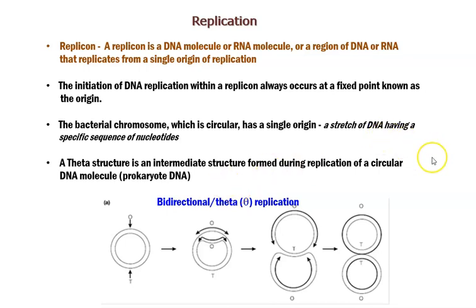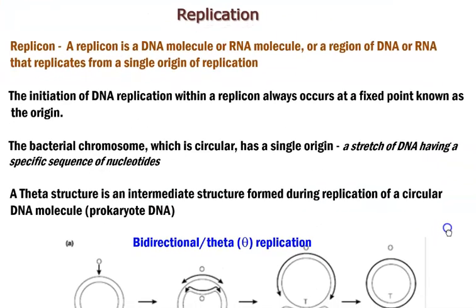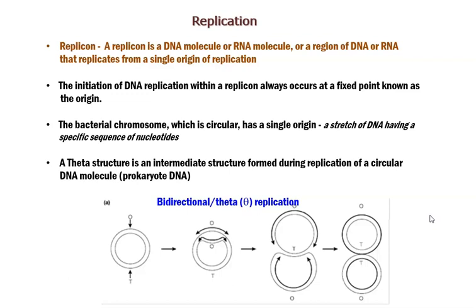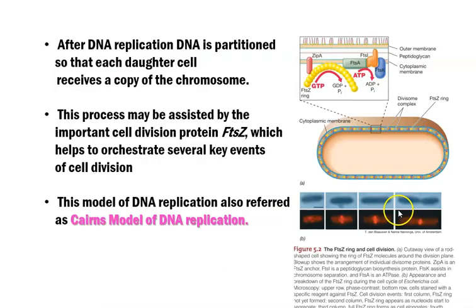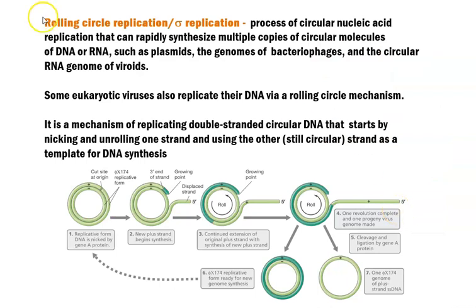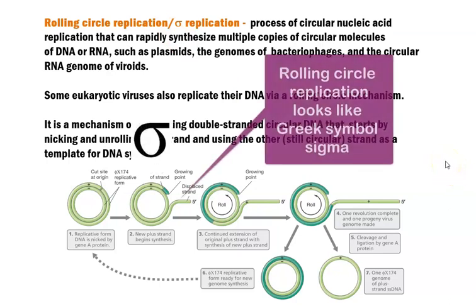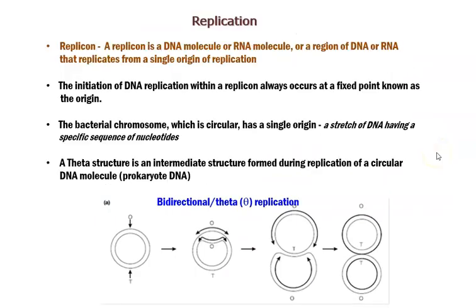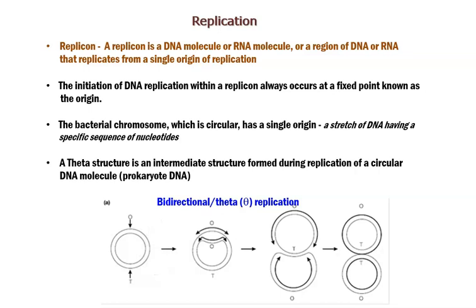In this lecture, we are going to see some mechanisms by which the replication process takes place in the organism. The first one is called bidirectional replication or theta replication, and the next one is called rolling circle replication or sigma replication. Here, theta and sigma refer to Greek symbols — during the molecular events of replication, you can see a theta-like structure or sigma-like structure in the DNA molecule.